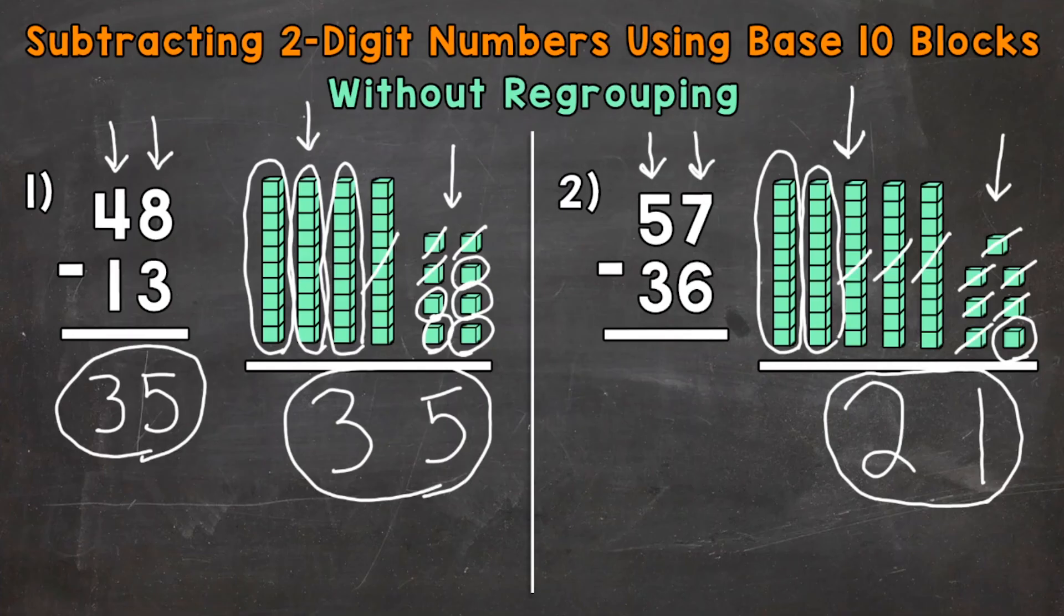Let's solve the problem to the left as well and see if we still get 21. Start with the ones: 7 minus 6 equals 1. Now for the tens: 5 minus 3 equals 2. And we get 21 over there as well.